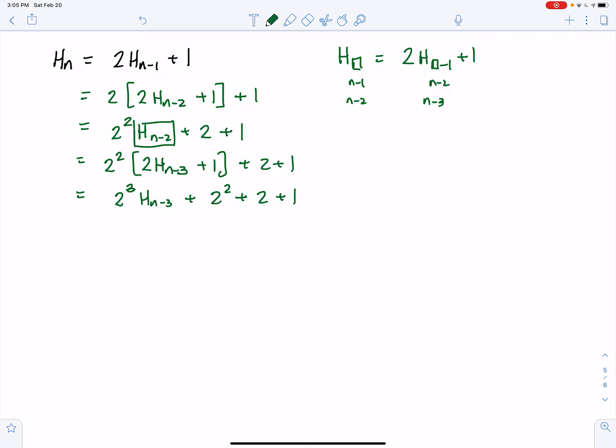At this point, are we seeing a pattern? It looks like we're subtracting whatever we're raising 2 to the power, and then we're adding the remaining powers of 2. So this means we can fast forward to h₀.